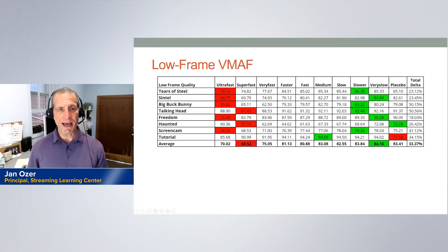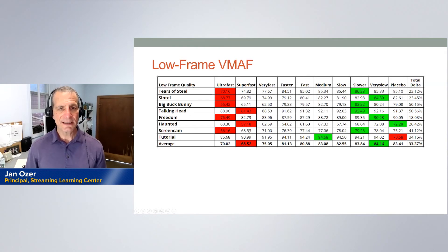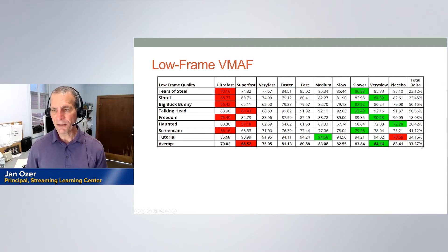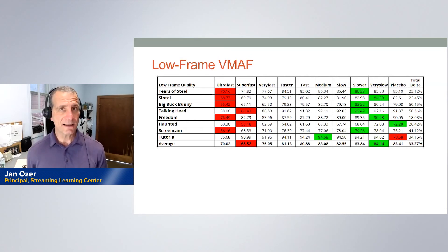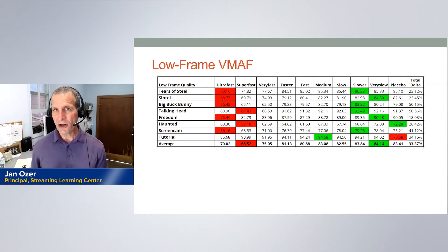Here's low frame VMAF — the lowest VMAF score for any frame in the video. We see scores concentrated low overall, with some scatter, and a 33% difference in delta between the highest and lowest quality presets, with some scores in the 50s. This tells us that while average quality may be acceptable, low frame quality is a particular issue with ultrafast and superfast, which is why you typically avoid them except for live encoding where you need the throughput.